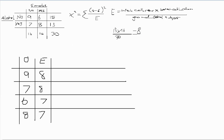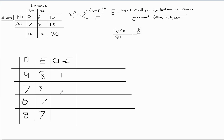The next step is to subtract the expected frequency from the observed frequency. We add an O minus E column to our table and get: 9 minus 8 equals 1, 7 minus 8 equals negative 1, 6 minus 7 equals negative 1, and 8 minus 7 equals 1.